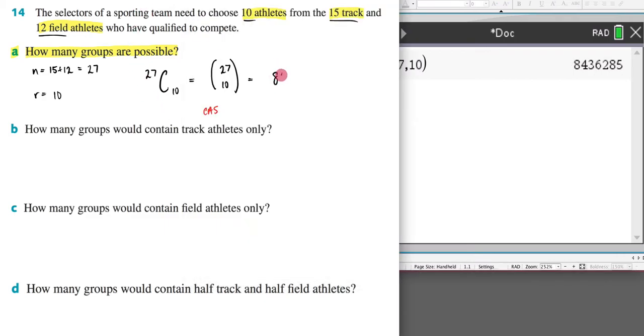So now I'm going to write that in: 8436285 and that's my answer to a. Let's now move on to b. How many groups would contain track athletes only? So now we're just considering the track athletes.